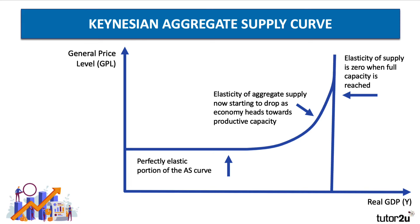And eventually we get to the full capacity level of national output, where the elasticity of the Keynesian aggregate supply curve is zero. And at that level, we've reached full capacity national output.